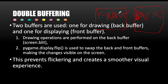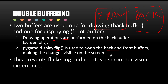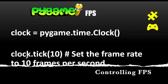The front buffer is what is being displayed right now, and the back buffer is where you do your updates. In the last step of the game loop you flip the buffers, so the back buffer becomes what is displayed and you see the updated graphics. Drawing operations are performed on the back buffer via screen.blit(), and pygame.display.flip() swaps the buffers, preventing flickering and creating a smoother visual experience.